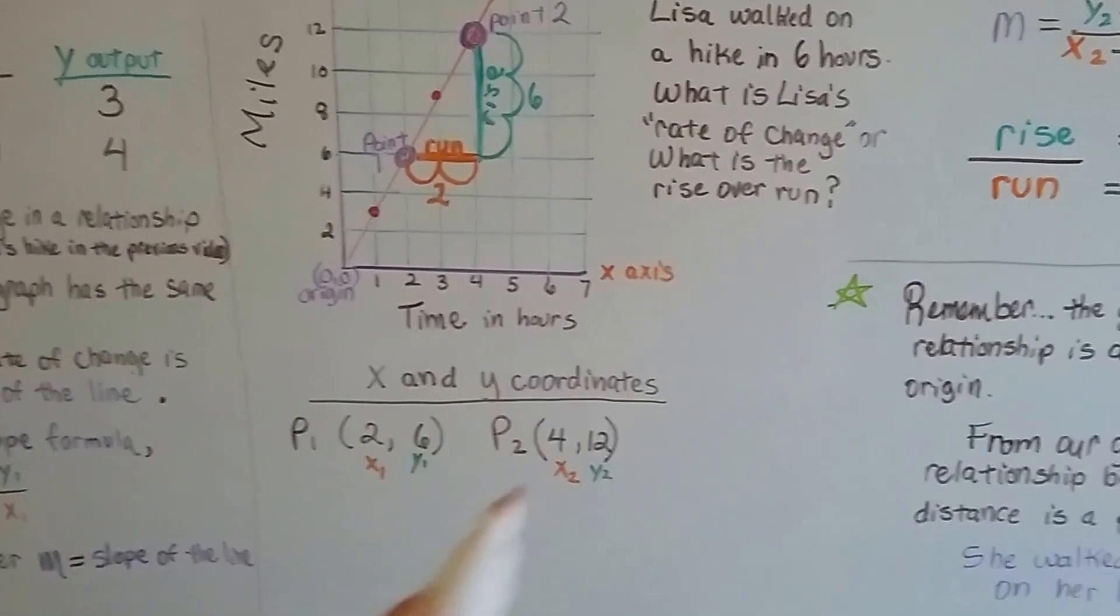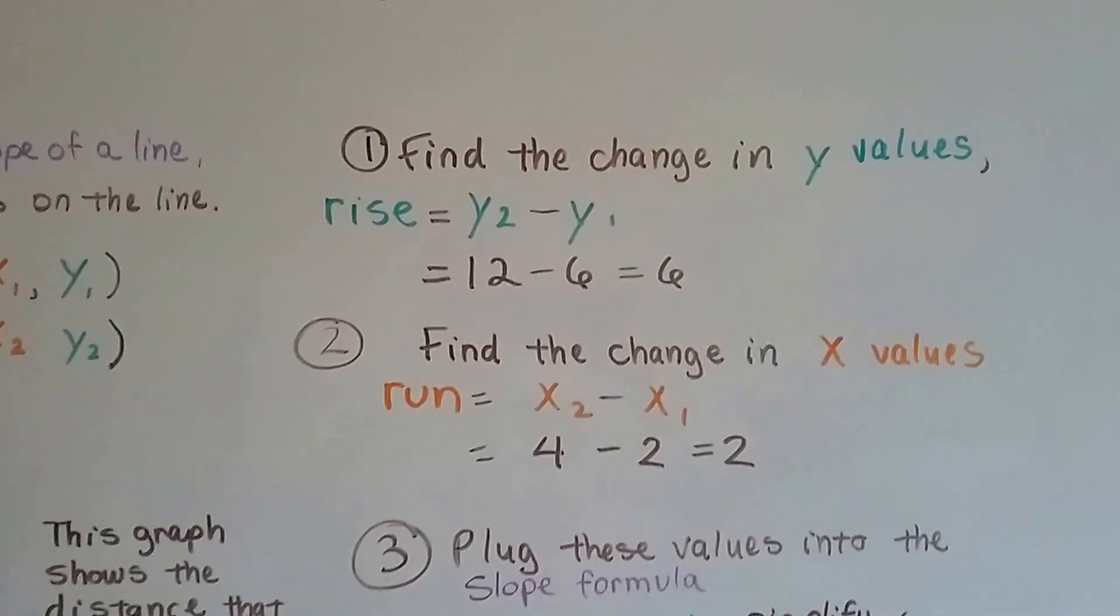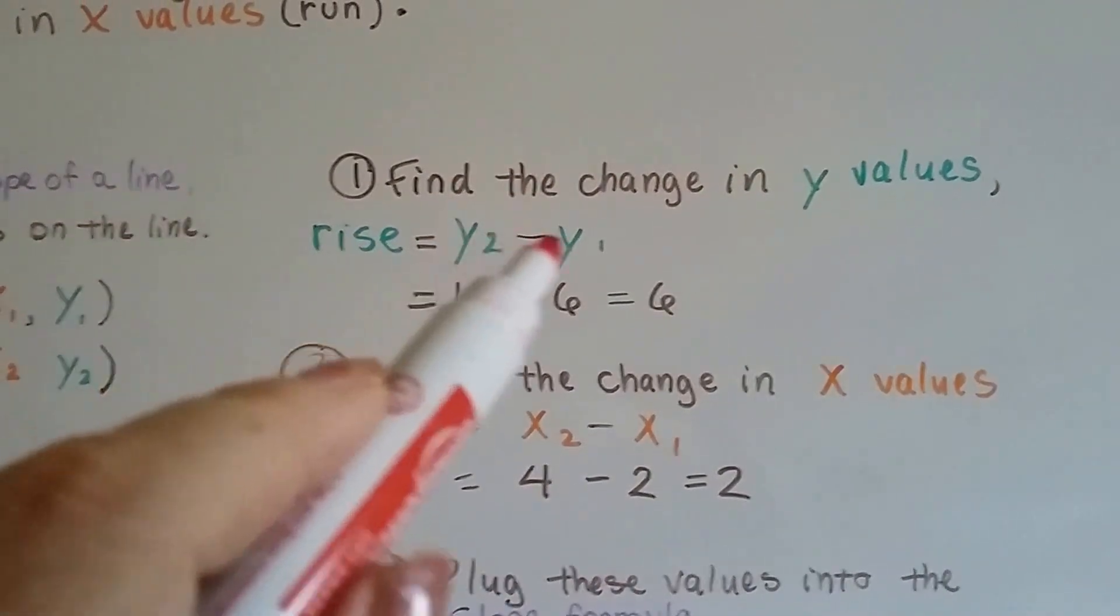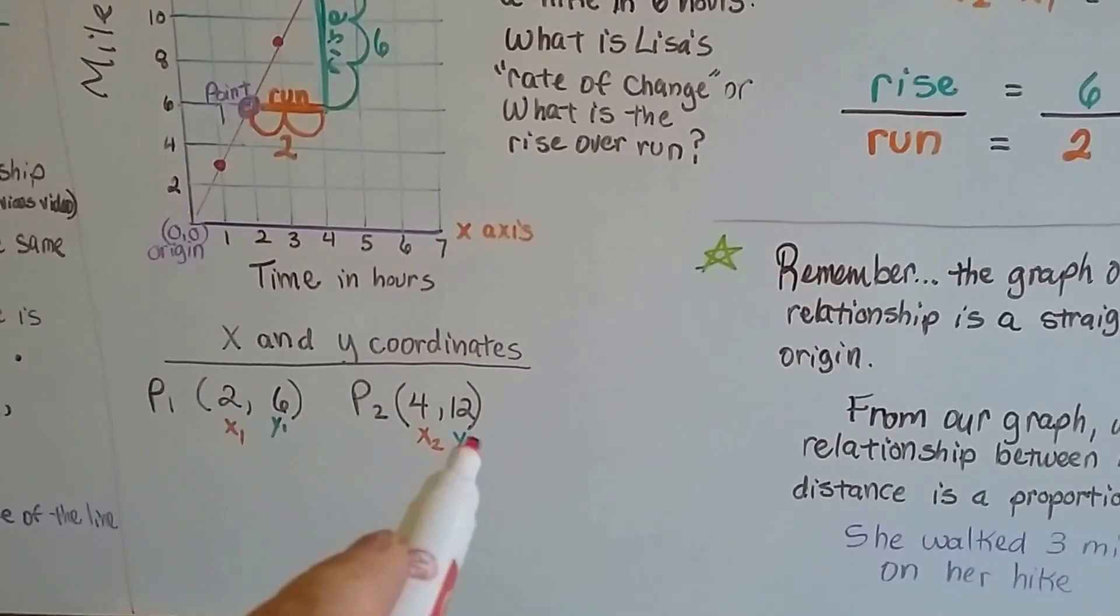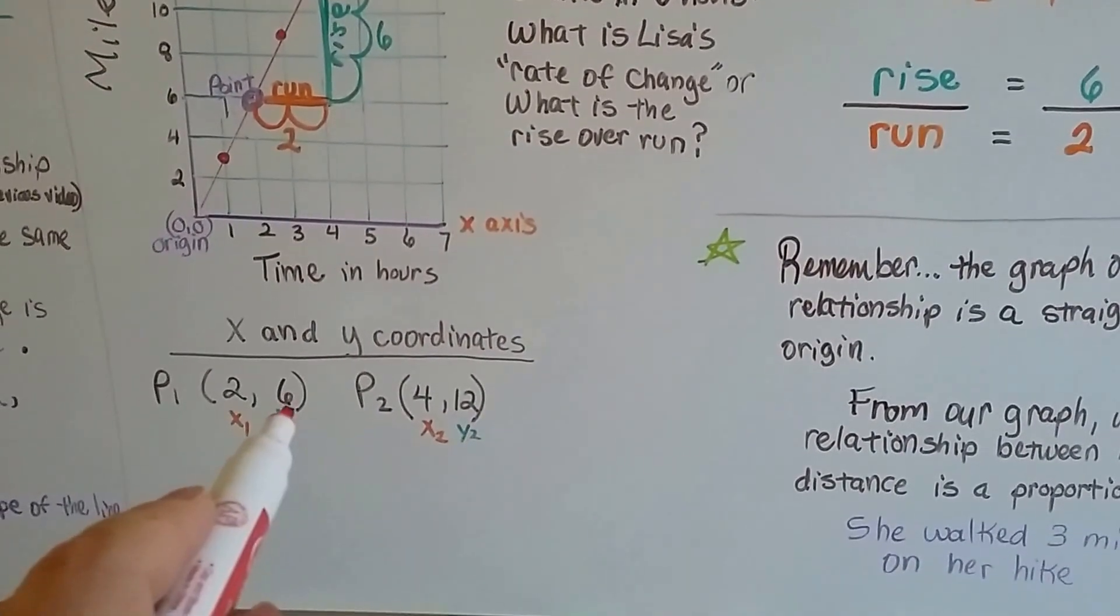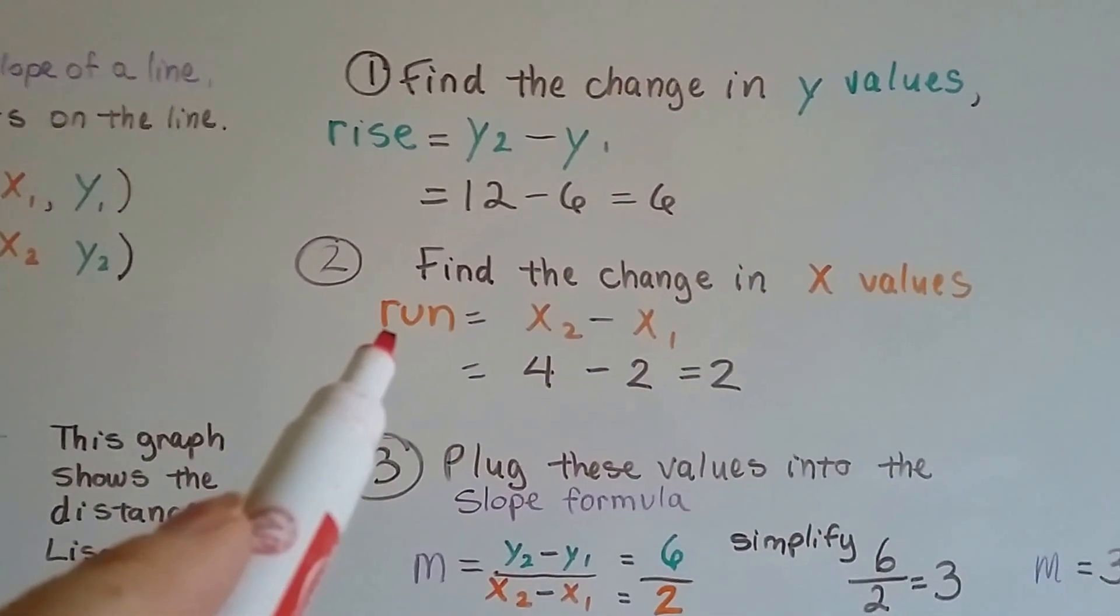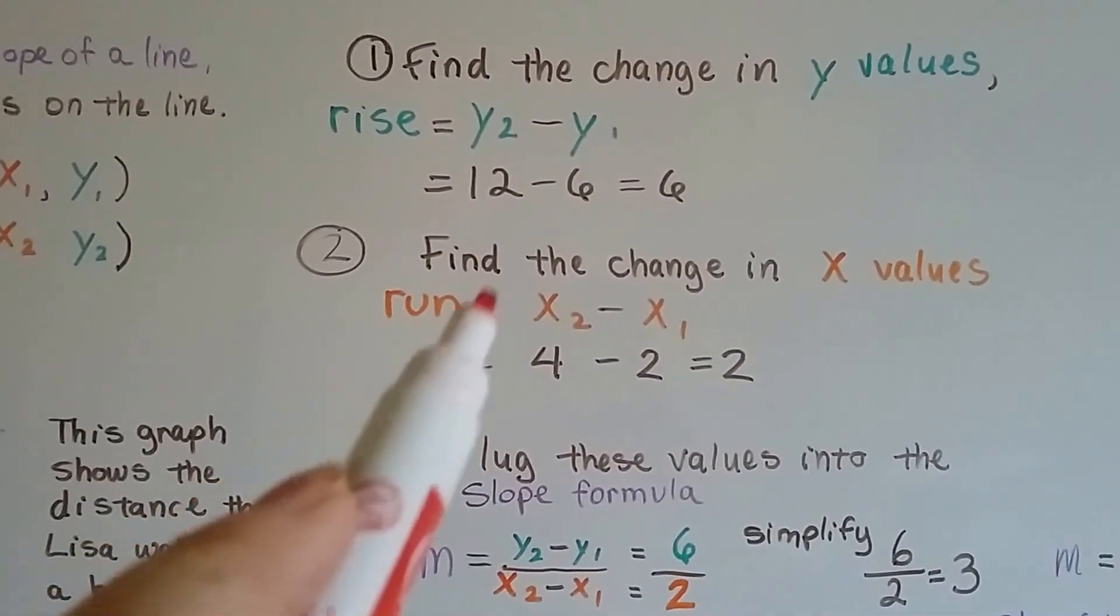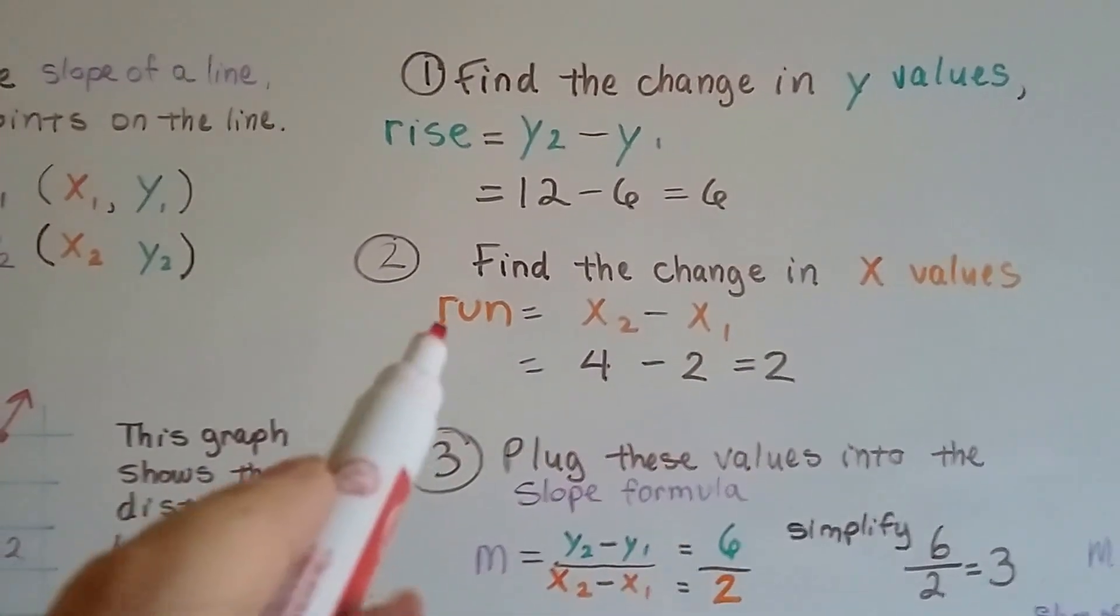Now we can do the subtraction. We find the change in the y values first, that's the rise. It's y2 minus y1. We look at our two coordinates. y2 is 12, and y1 is 6. So we're going to do 12 minus 6. 12 minus 6 is 6. We've got our rise. Now we find the change in x values, that's the run. It's x2 minus x1. x2 is 4, x1 is 2. We're going to do 4 minus 2. 4 minus 2 is 2. Now we've got the run.